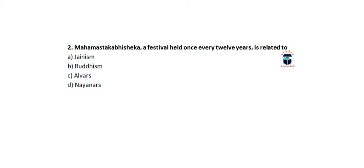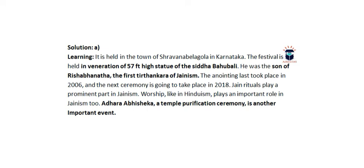The second question is: Mahamastakabhisheka, a festival held once every 10-12 years, is related to — A) Jainism, B) Buddhism, C) Ayyavazhi, D) Nayanars? The answer is A, Jainism. Mahamastakabhisheka is a festival held in the town of Shravanabelagola in Karnataka, in veneration of the 57-feet-high statue of Siddha Bahubali. He was the son of Rishabhanatha, the first Tirthankara of Jainism. The last ceremony took place in 2018. Jain rituals play a prominent role in Jainism worship, and the Adhara Abhisheka temple purification ceremony is another important event.